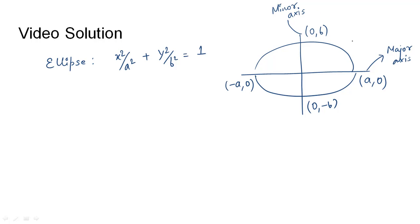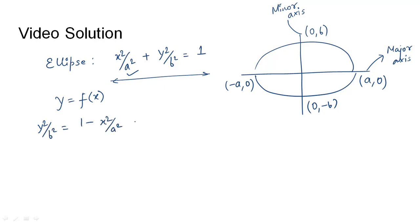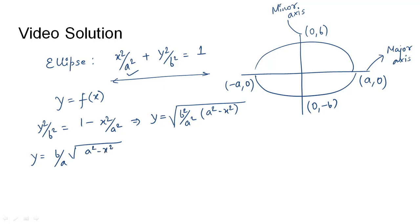Sometimes the x-axis can be the minor axis and the y-axis the major, in which case the orientation of the ellipse will be along the y-axis. We need to frame this equation in the format y = f(x) so we can integrate it over a certain limit to find the area. Taking the x²/a² term to the right-hand side: y²/b² = 1 − x²/a², giving y = b/a · √(a² − x²).